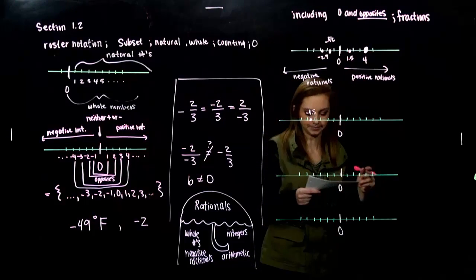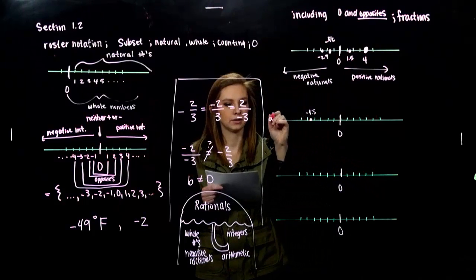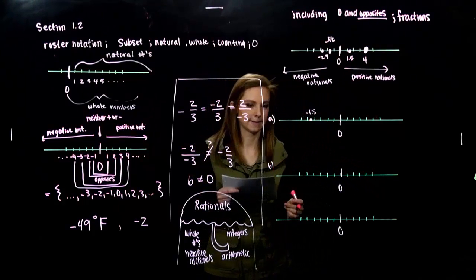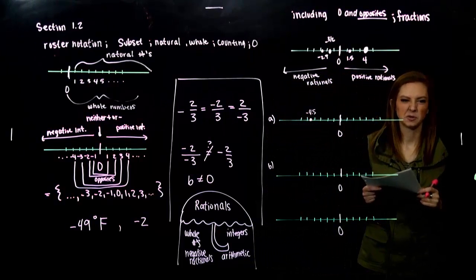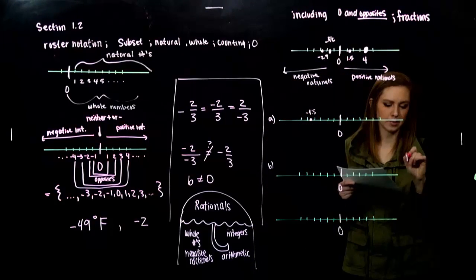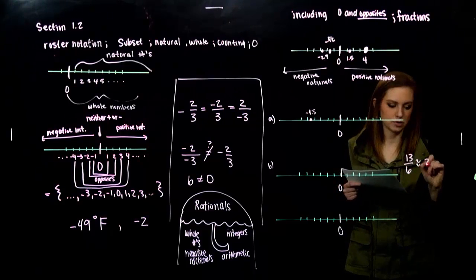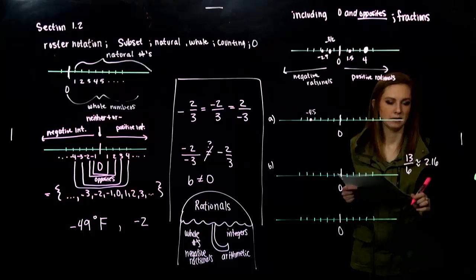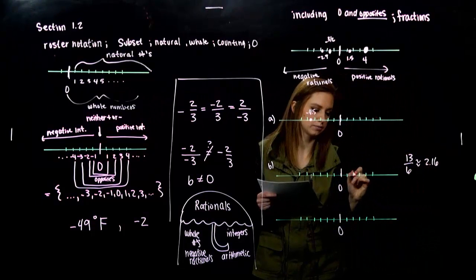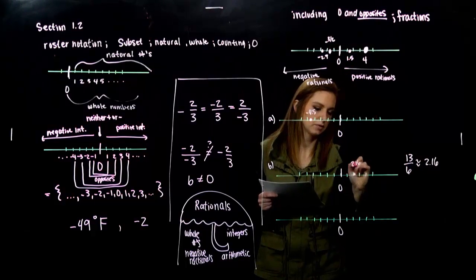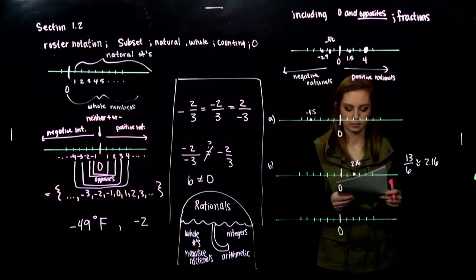To graph that second one. Thirteen over six. Does anyone know where that is on the number line? When it's in that form, not really. But, we can approximate it. If I do the division, it's around two point one six. Now, I have a better idea of what it's looking like. So, two and a little bit larger. Around there.